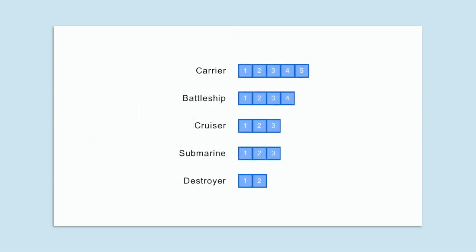Each player will have 5 ships in the game, and each ship will be a different length. There are some different versions of the game with slightly different ships, but for this video, each player will have 1 carrier ship that is 5 spaces in length, 1 battleship that is 4 spaces, 1 cruiser that is 3 spaces, 1 submarine that is 3 spaces, and 1 destroyer that is 2 spaces in length.